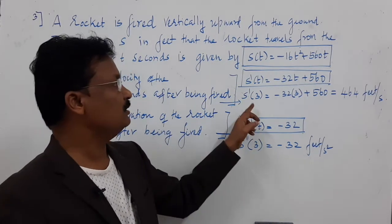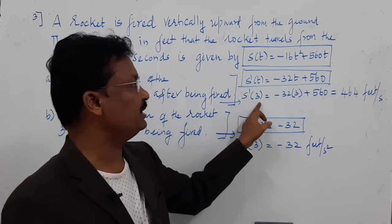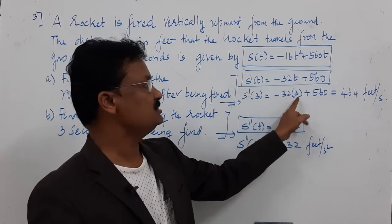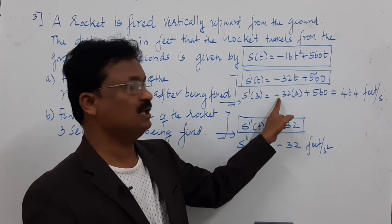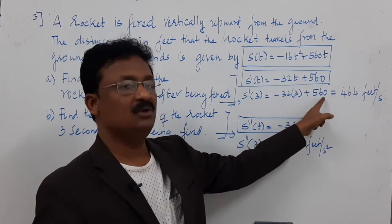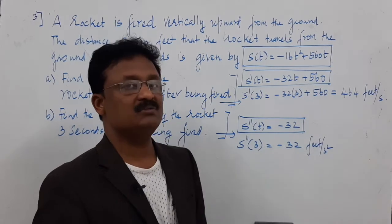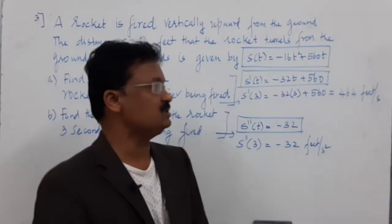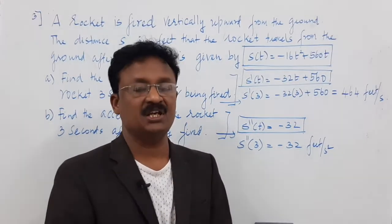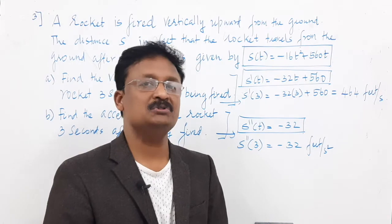Velocity is the first derivative. So s dash of t = −32t + 560. At t = 3 seconds: velocity = −32(3) + 560 = 464 feet per second.